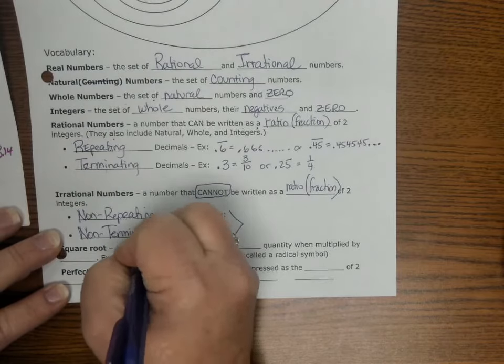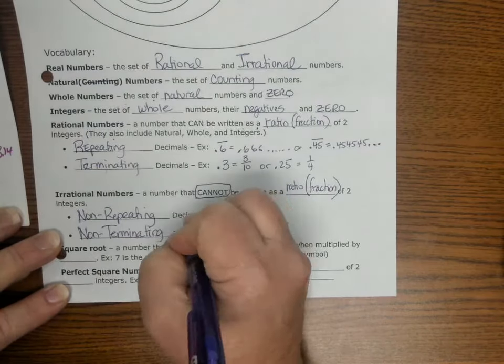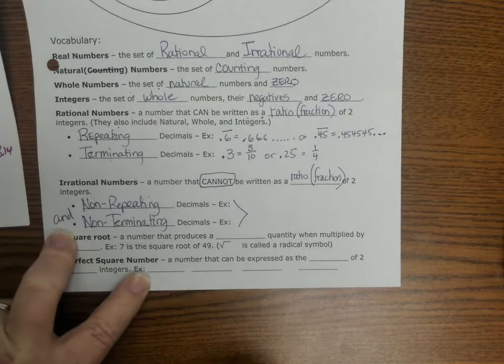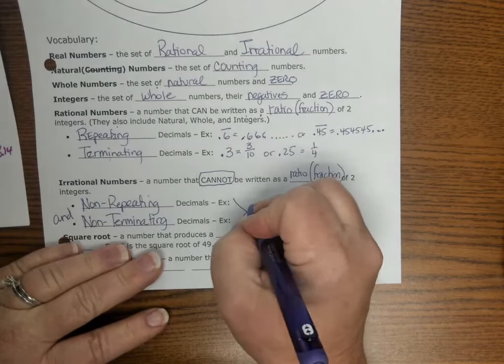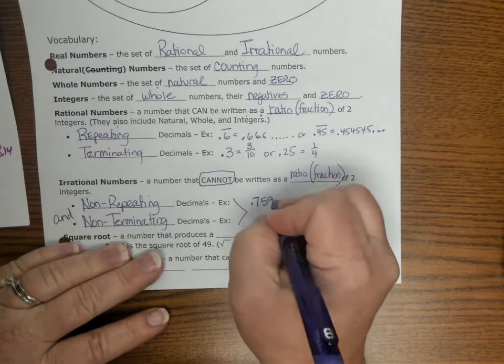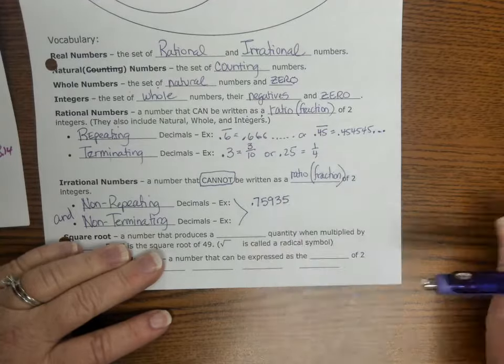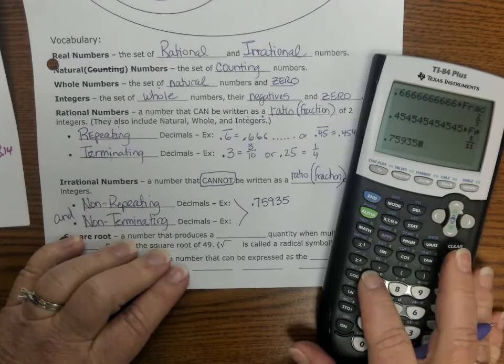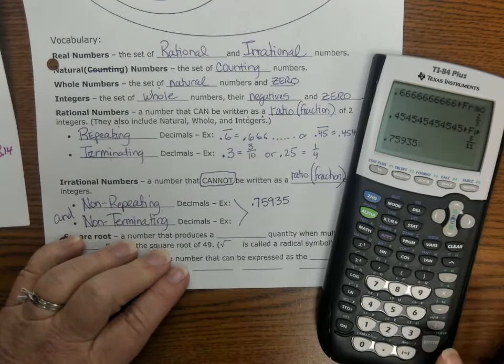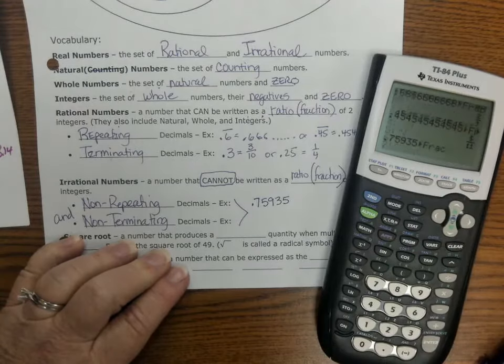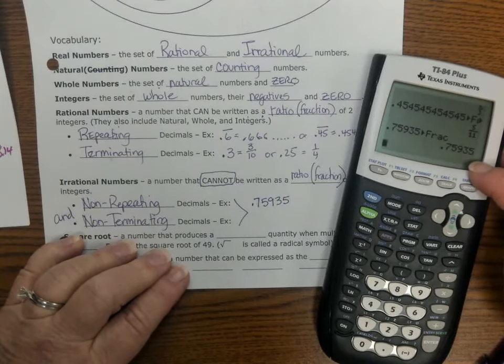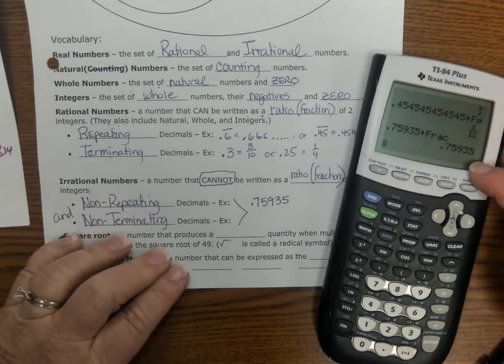So we have non-repeating decimals. An example of that would be, in both of these examples, let's write this, and non-terminating. They are non-repeating and non-terminating. So here we go, let's .75935, and if we were to put that in, .75935, math, enter, enter, oh no, that, we wouldn't, see, it doesn't turn it to a fraction. And so that is terminating, but it will not turn it into a fraction. So it's non-repeating, non-terminating.